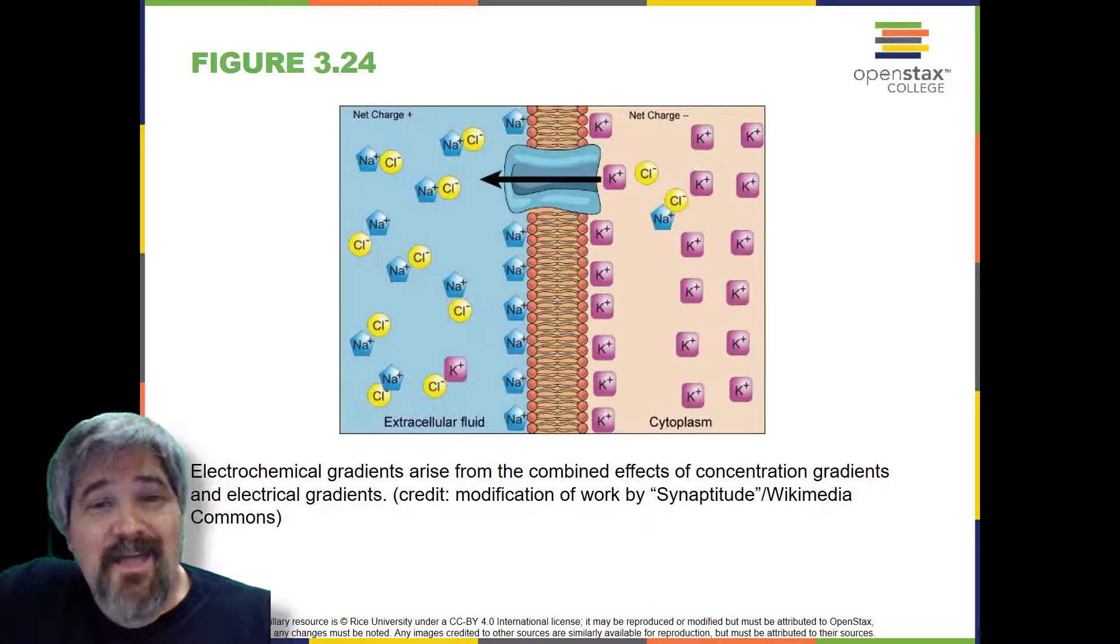The combined gradient that affects an ion is called its electrochemical gradient, and it is especially important to muscles and nerve cells.